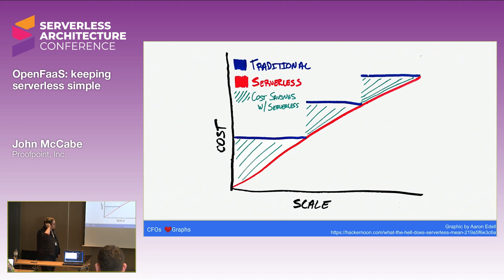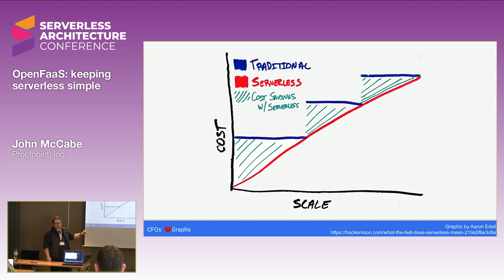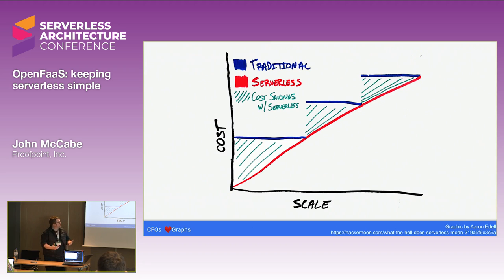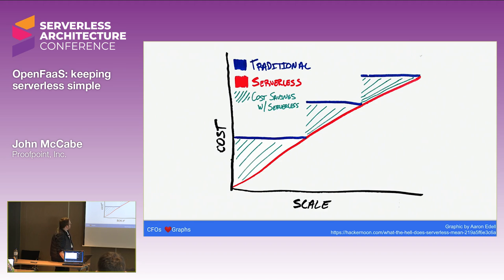In terms of increased resource utilization, anyone who remembers monoliths knows that expenditure looked like a step function as your service grew - a big massive outlay at the beginning, and then you had to double it again because you always had to over-provision capacity. But with the billing models we're seeing in serverless, you can track your usage far more linearly - you only pay for what you use, whether it increases at night and decreases during the day.